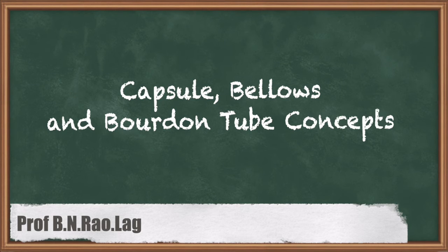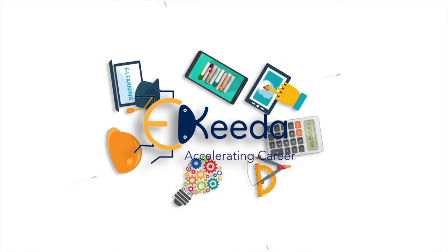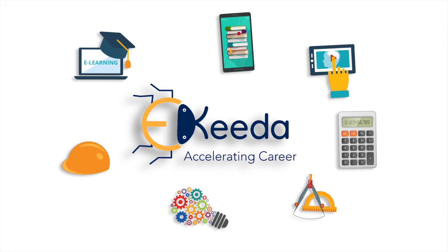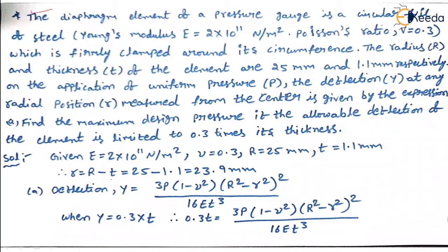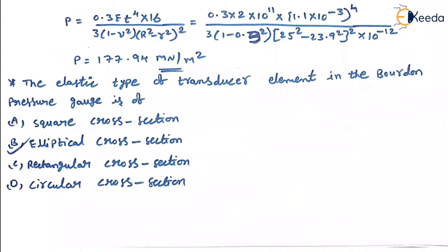Welcome students. In the previous session we finished the problem on the diaphragm — the deflection at any radius using the formula, and we submitted all the parameters to get the pressure. We obtained p equal to 177.94 mega newton per meter square. That problem is finished. Now in this session we are going for the next concept.